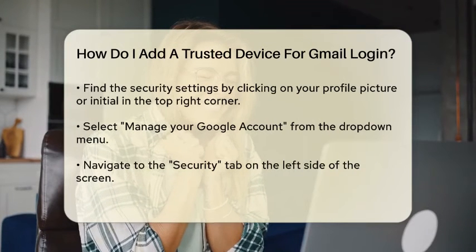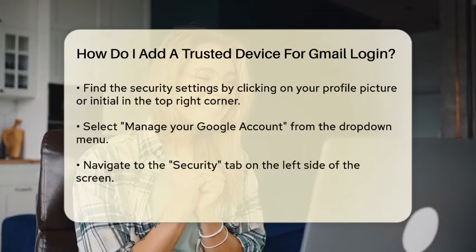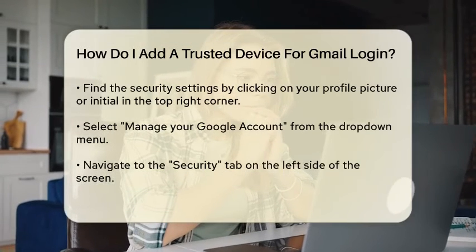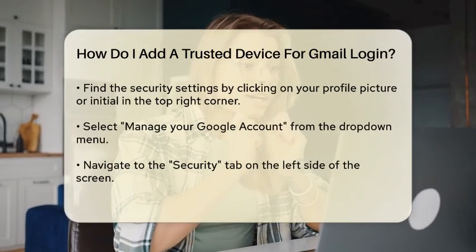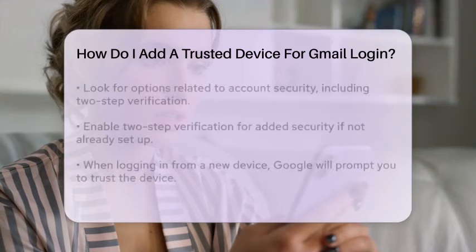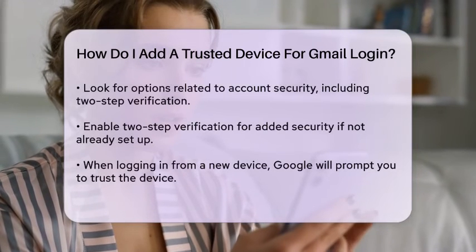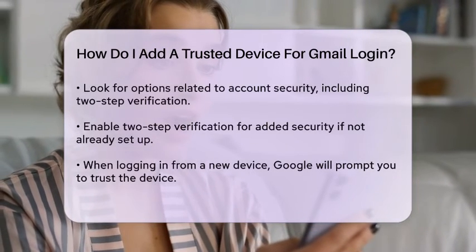Next, navigate to the Security tab on the left side of the screen. Here, you will find options related to your account's security, including two-step verification and device activity.